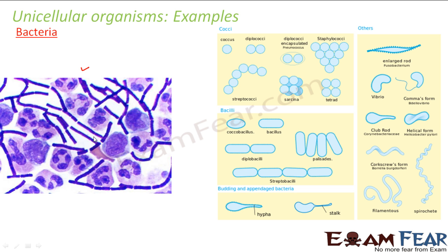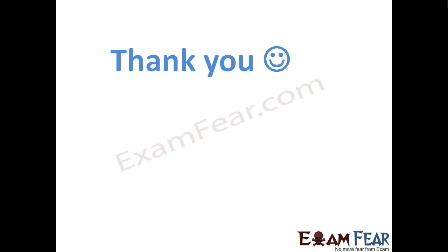These were some examples of unicellular organisms, where the organism is made up of just one cell and that single cell performs all the basic functions of that organism. With this we end our discussion on unicellular organism examples.